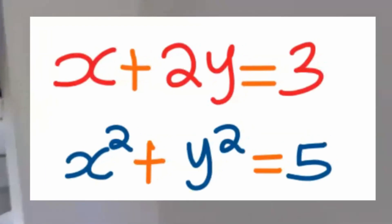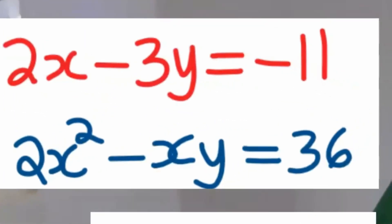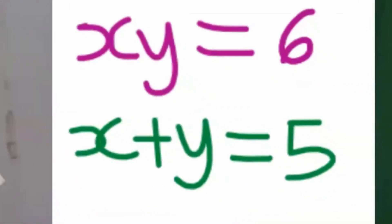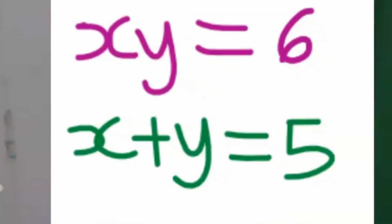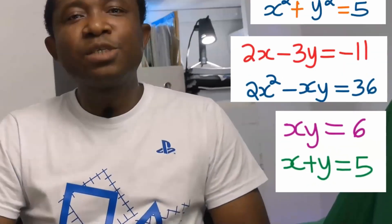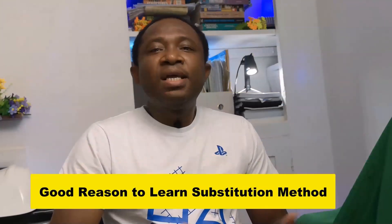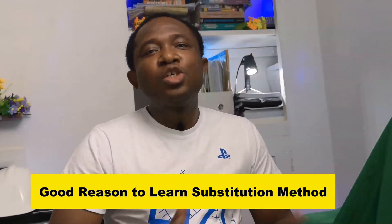For example: x + 2y = 3 and x² + y² = 5; or 2x − 3y = −11 and 2x² − xy = 36; or xy = 6 and x + y = 5. Using the Substitution Method for these kinds of problems is straightforward, as you are going to see in this video.